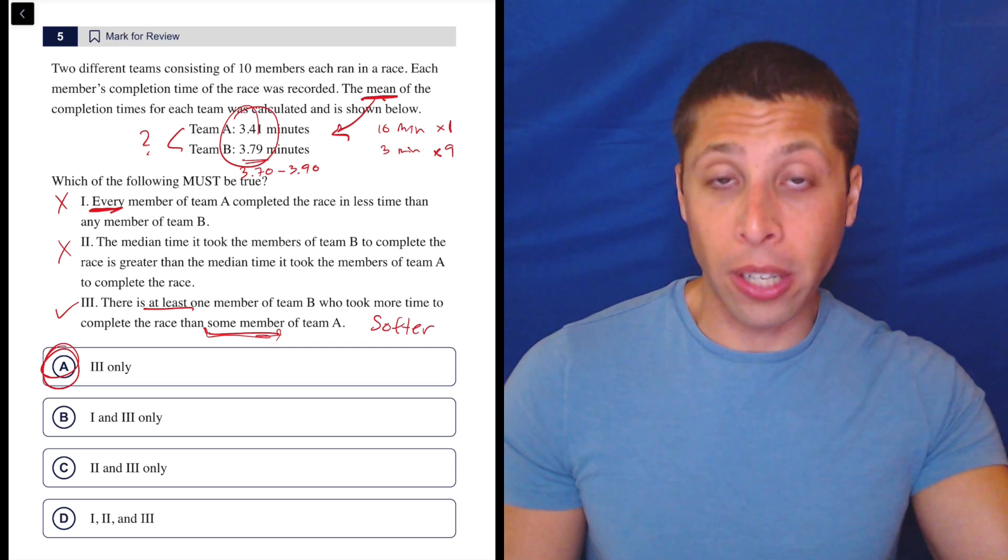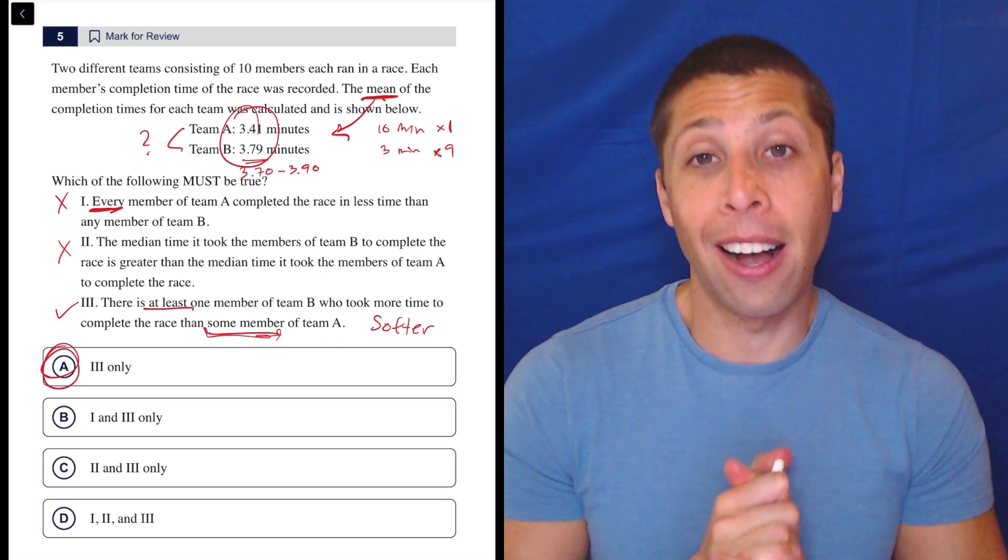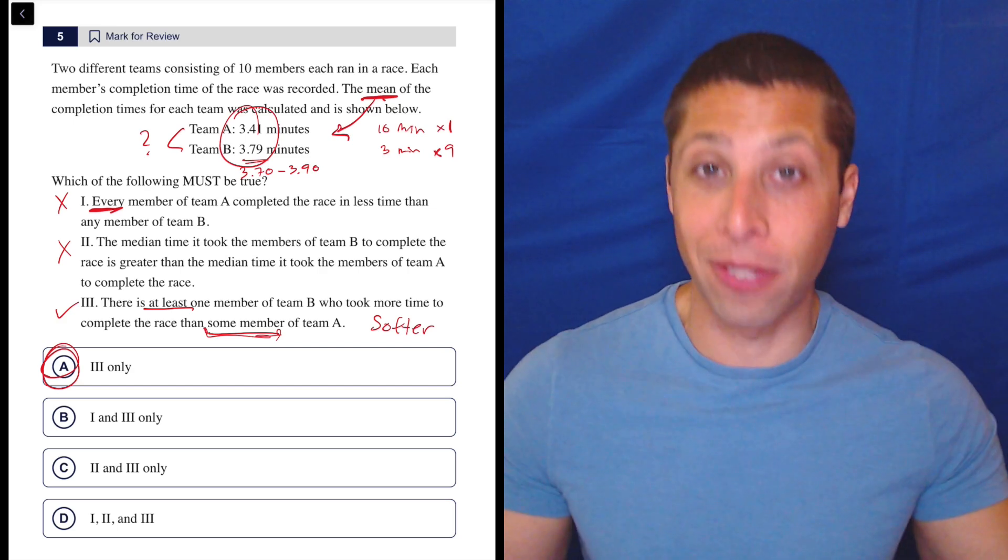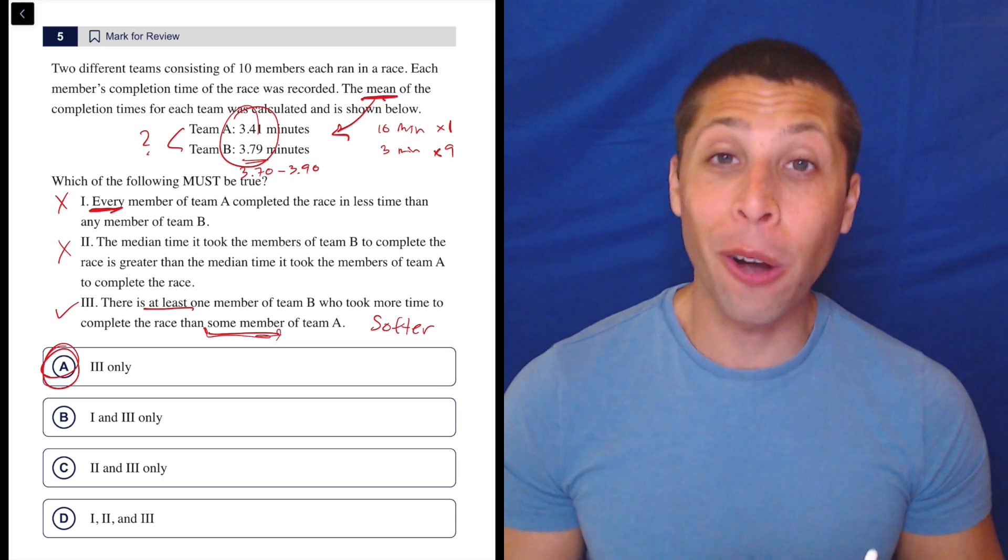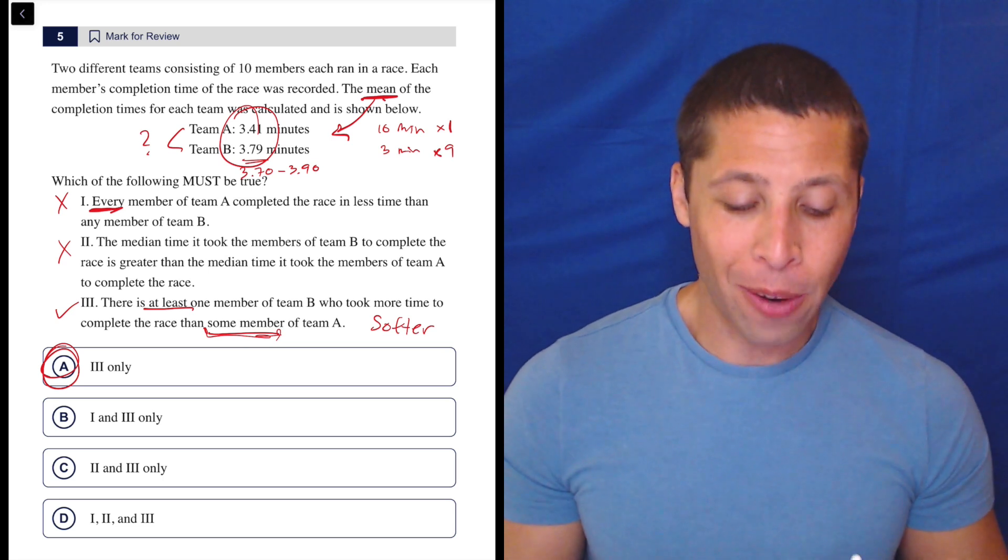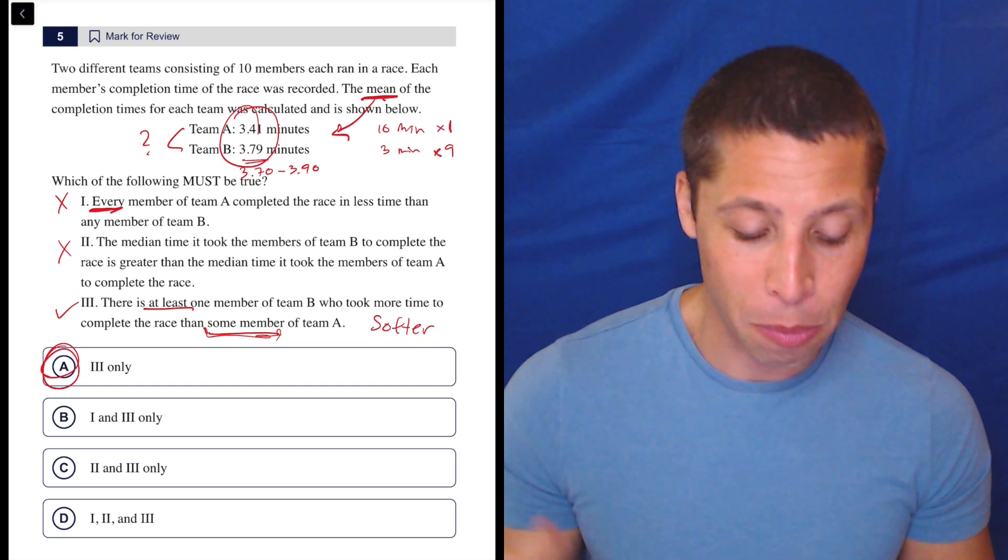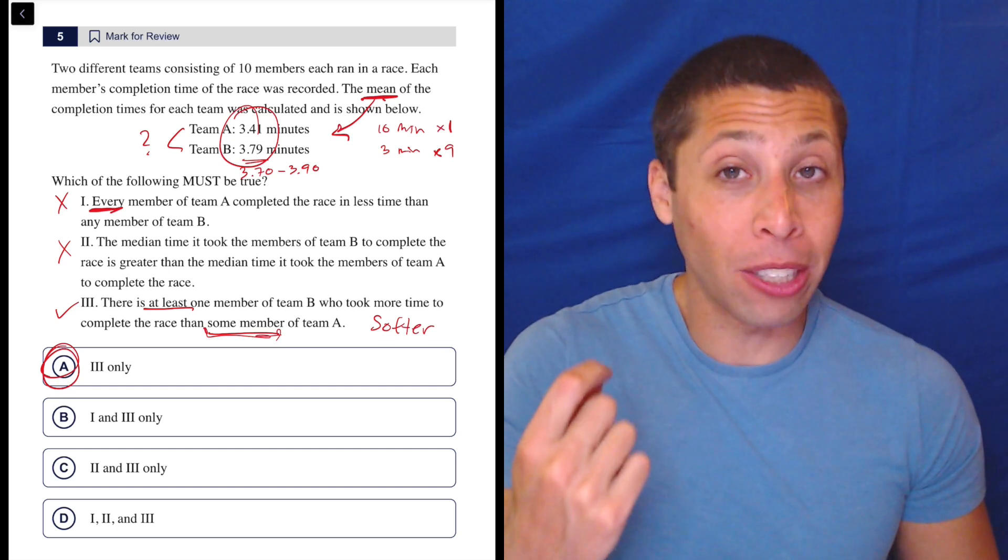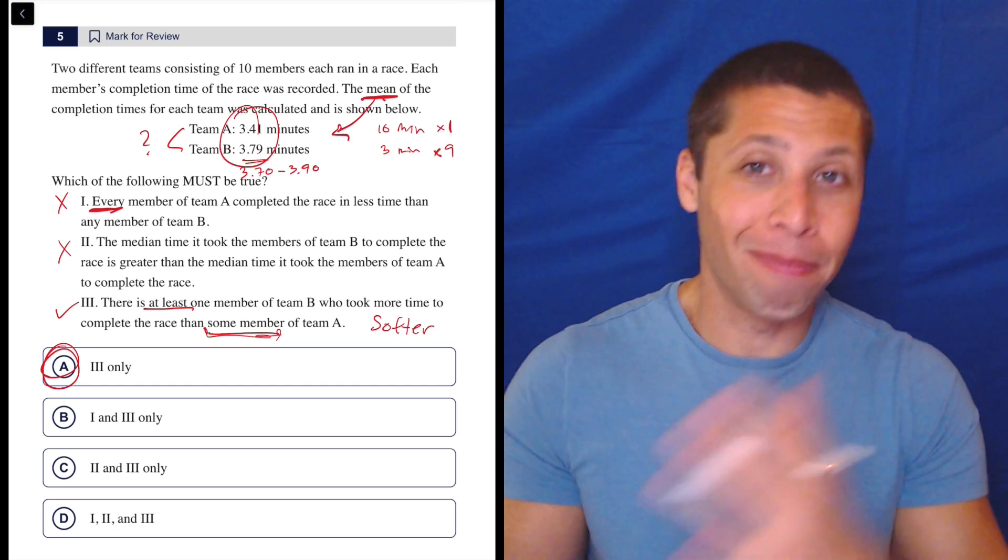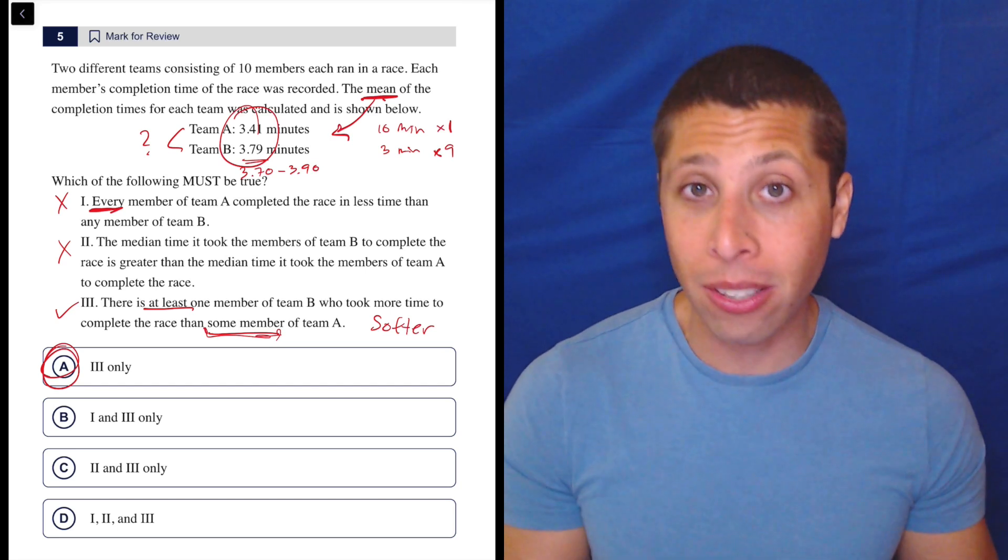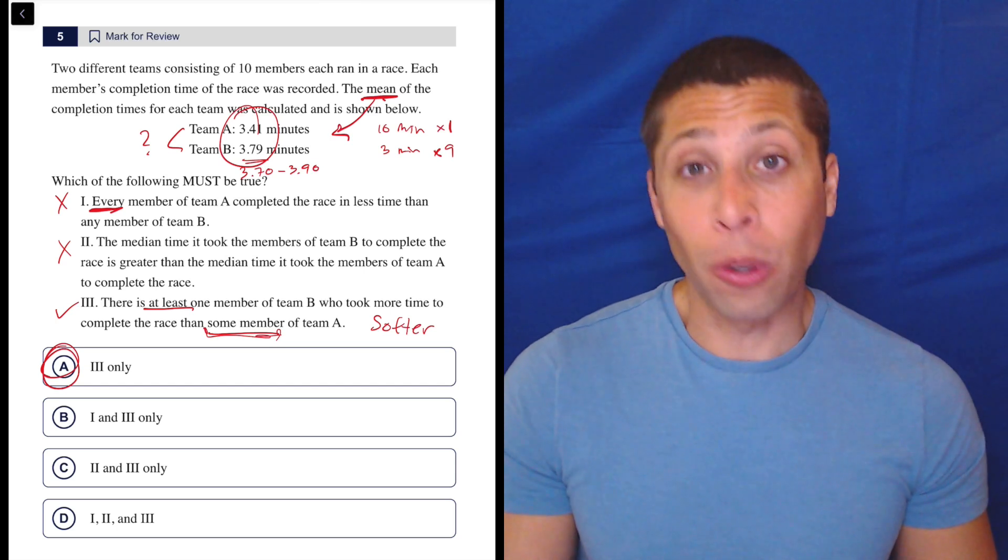Something I might do in other cases is try to come up with a list of 10 people and show you exactly what's going on. The reason I didn't do that here though is the numbers are really tough to think about. Am I going to be able to randomly pick numbers that have an average of 3.41 or 3.79? That's harder to do. If it was just like a regular three, I could probably do it, but I wouldn't want to worry about it being perfect here. So that's why I didn't make my own list. That means we have to do this a little bit more conceptually, which is unfortunate and very hard.